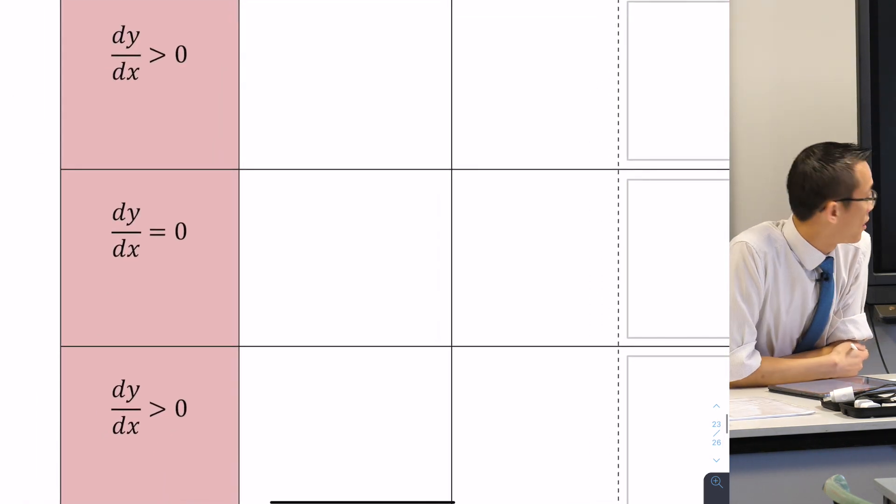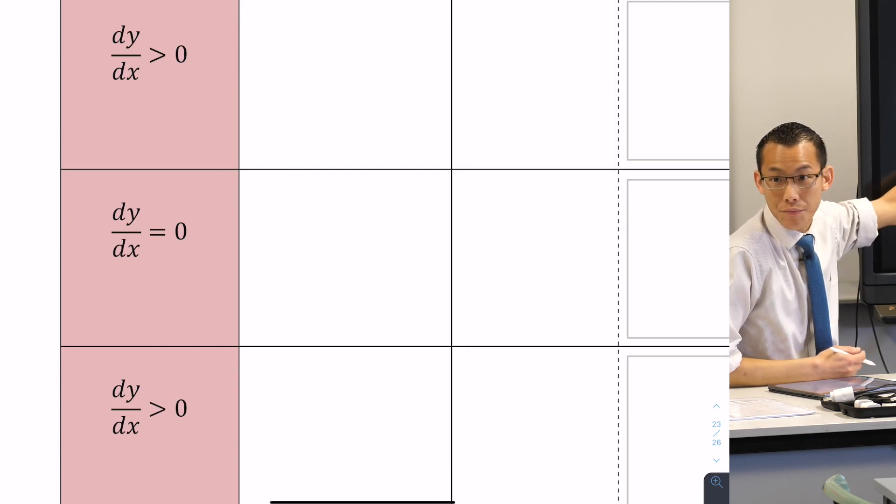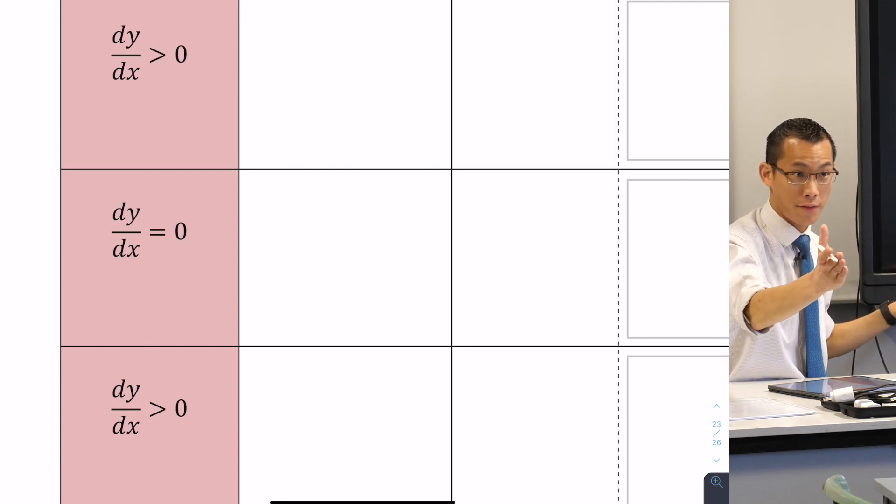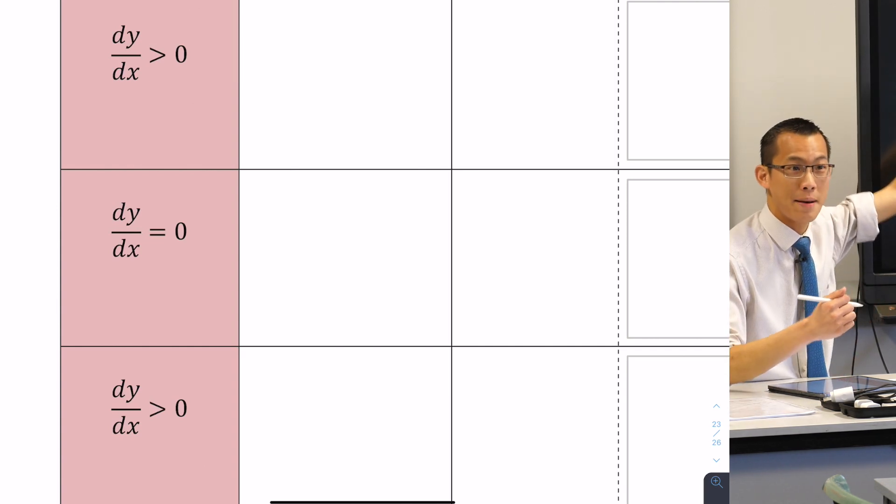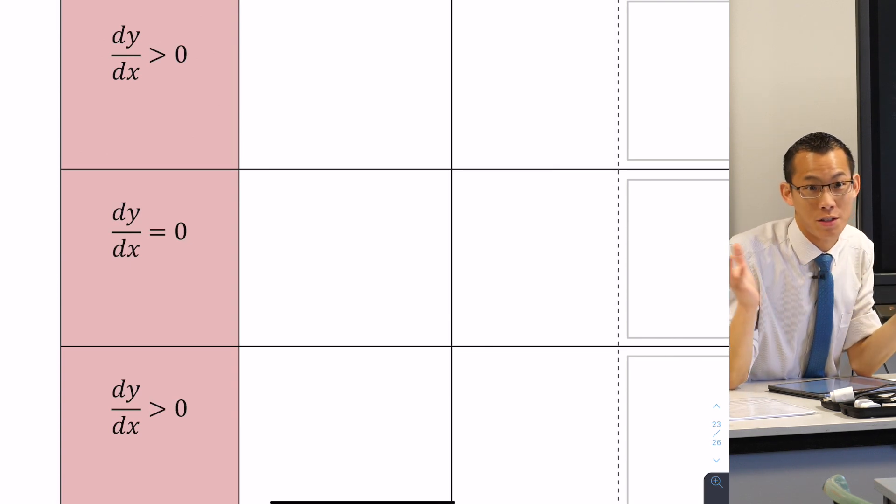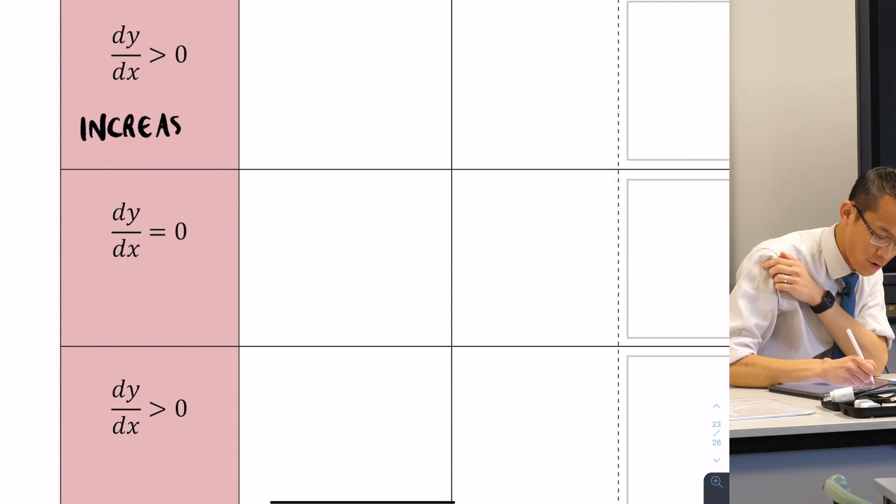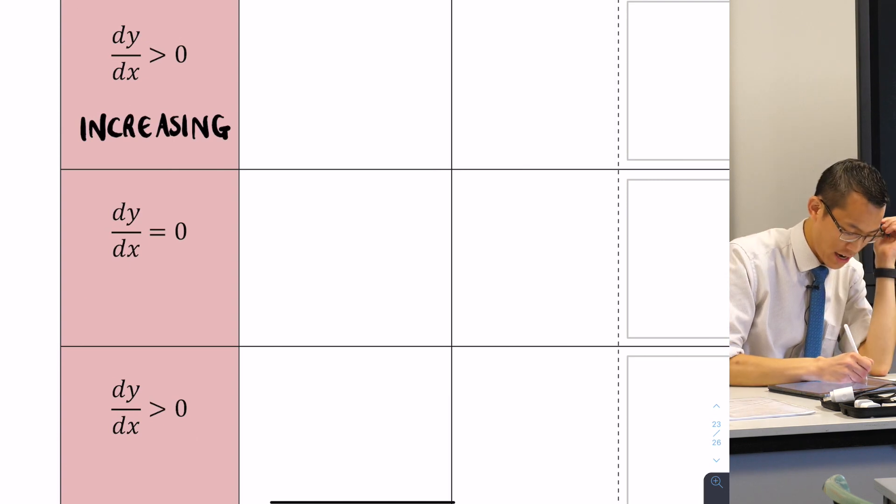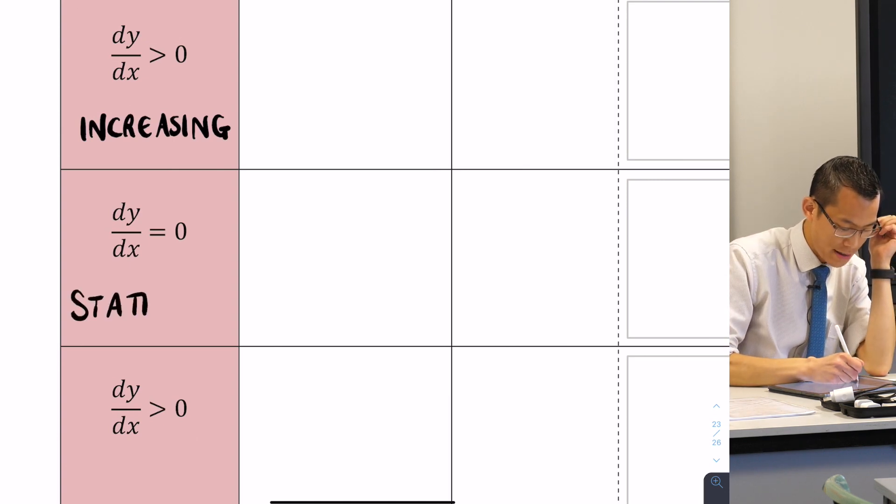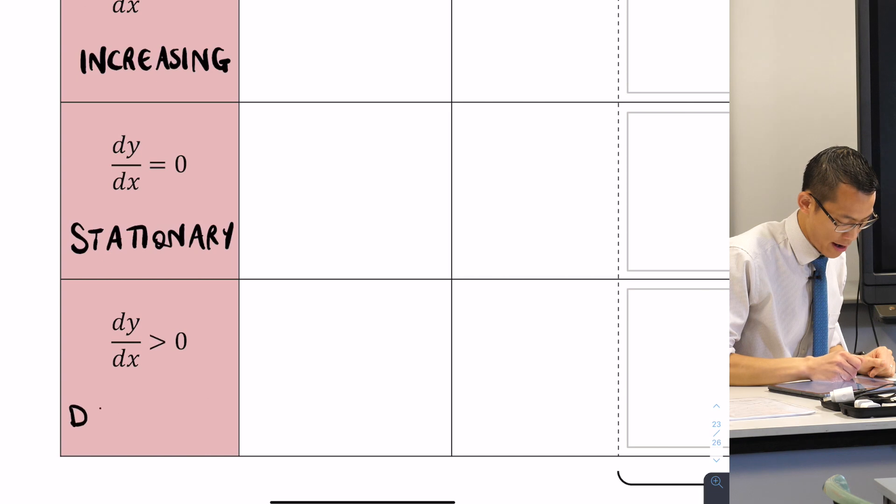So let's start over here on the left-hand side. This is which derivative again? This is the first derivative, very good. So when you know that the first derivative is positive, what does that tell you about the graph, about its shape? It's increasing, very good. We know when the derivative is zero, like at the bottom of that parabola we looked at, we call that stationary. And then when the derivative is negative, we call that decreasing, fantastic.